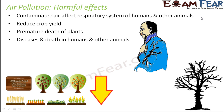Air pollution can cause diseases and death in humans and other animals. How harmful air pollution will be depends on: the concentration of the pollutants — that is, the concentration of the harmful substances; the duration of exposure — for how long you are getting exposed to polluted air; and also the type of organism, since different organisms have different levels of immunity. Depending on all these three factors, it determines how much disease or death it can cause in various animals.